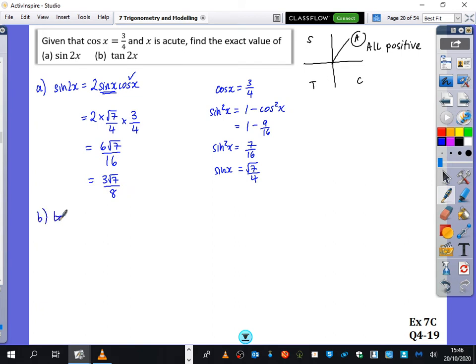The last bit is it wants us to find out what tan 2x is. Now, we know from our double angle formula that tan 2x is 2 tan x over 1 minus tan squared x. Well, I know what cos x is here. I know what sine x is here. And I know that tan x is sine x over cos x.